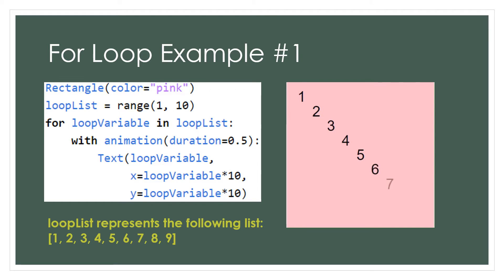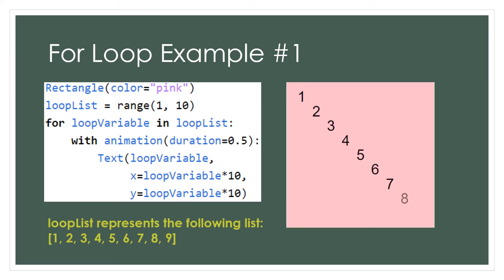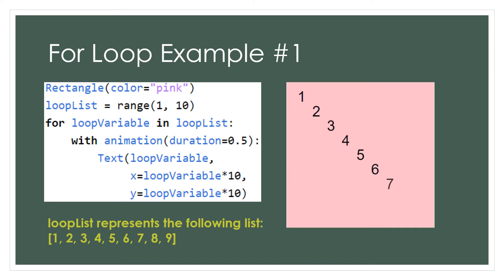The loop variable will be elements of our loop list as we cycle through. So we have an animation where every half second we see the next element in the list starting with 1, then 2, 3, and so on. Once we have completed cycling through the list, our code is complete. Notice we are also using math to choose the x and y position of our text — both are 10 times the loop variable value. So 1 gets printed at x position 10 and y position 10, and 2 gets printed at x position 20 and y position 20. This helps us space out our numbers so they don't overlap. Pause here if you need to so you can fully process what this code is doing and how it works.